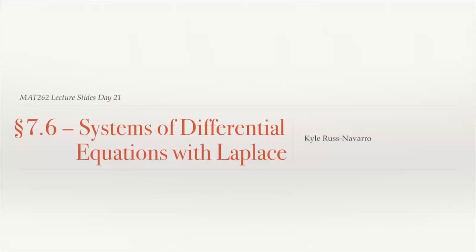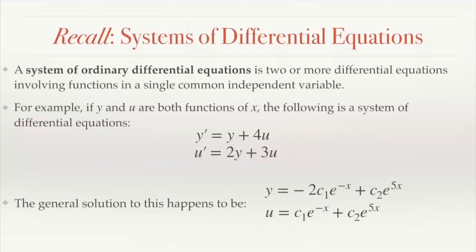Hello and welcome to the chapter 7.6 lecture on systems of differential equations with Laplace transforms. Recall that a system of ordinary differential equations is two or more differential equations involving functions in a single common independent variable. For example, if y and u are both functions of x, then the following is a system of differential equations: y prime equals y plus 4u, u prime equals 2y plus 3u. These are two distinct functions related to each other in this way.